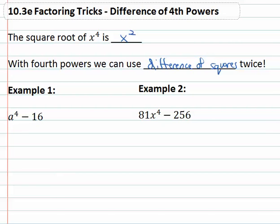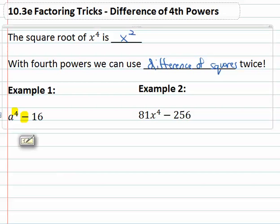So that's something to be aware of as we look at something like a to the fourth minus sixteen. We have two terms, so I'm thinking shortcuts. We're subtracting, that's a good sign, and we can take the square root.